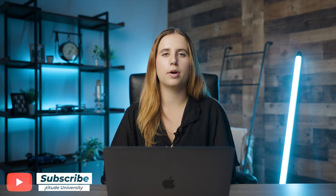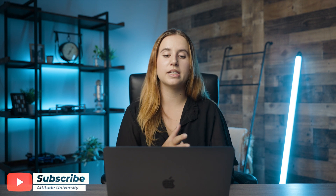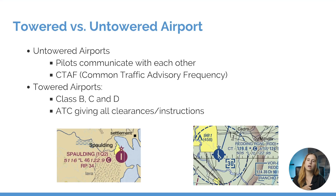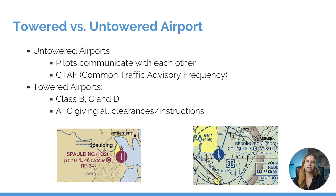To start off, we can split up our airports between towered and untowered airports. At our untowered airports, pilots are communicating with each other on the CTAF, or the common traffic advisory frequency. At towered airports such as our class Bravo, Charlie, and Delta, ATC or air traffic control is the one giving those clearances and instructions to the pilots.